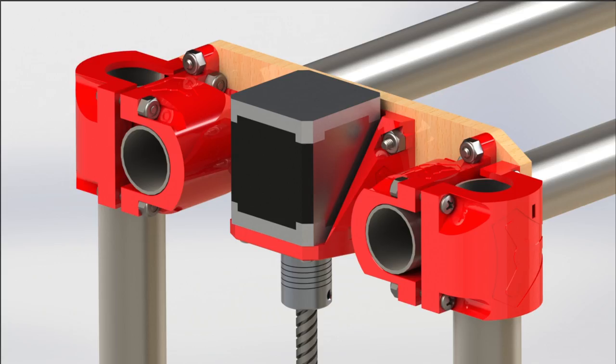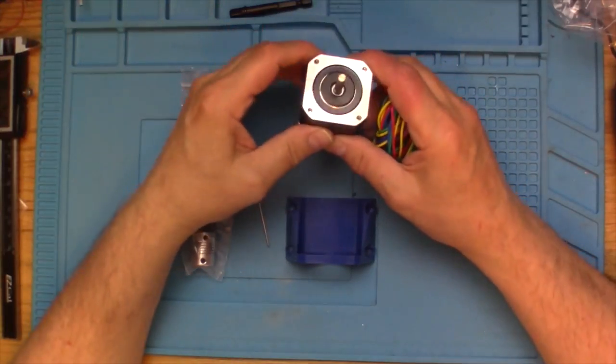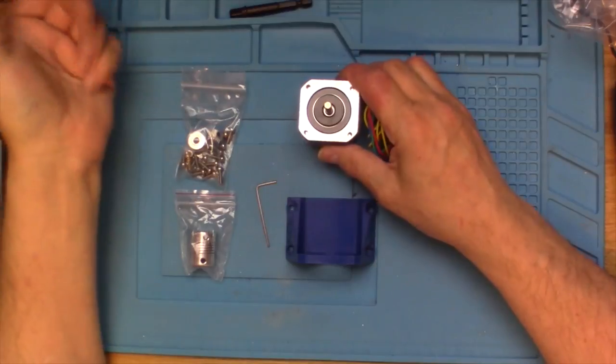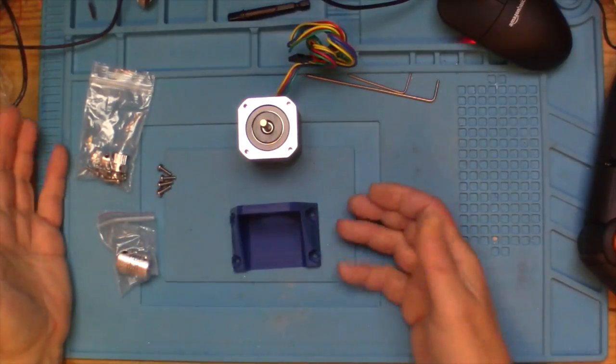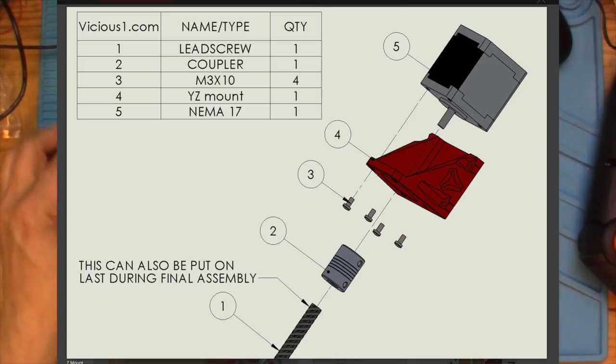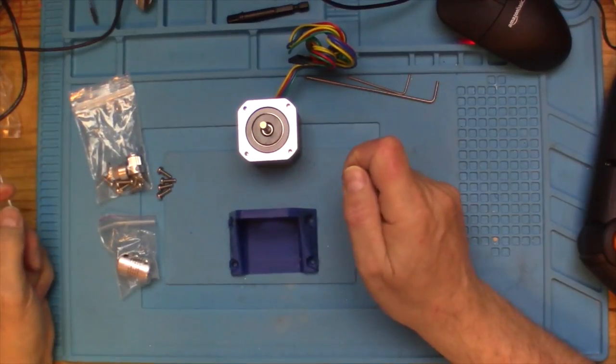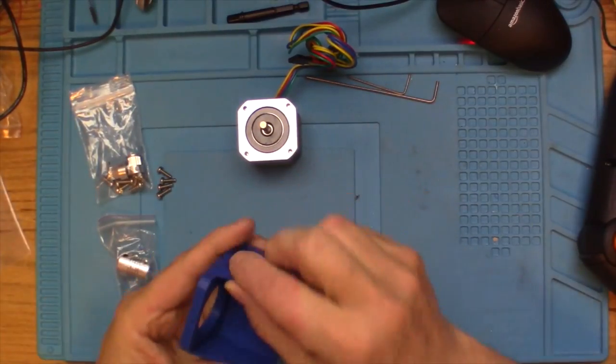Alright, we're going to start working on the Z assembly now. We need to do two of these, but first we're going to start with the sub-assembly here. We're going to assemble a YZ mount for the Z axis panel.